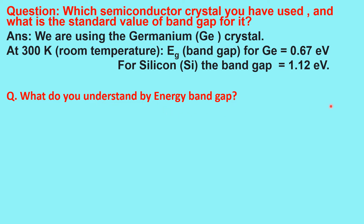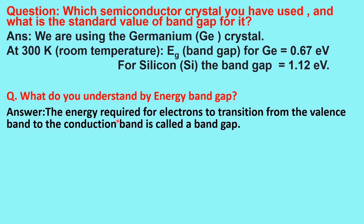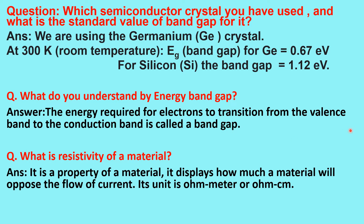What do you understand by energy band gap? The energy required for electrons to transition from the valence band to the conduction band is called the band gap. What is resistivity of a material? It is a property of a material that describes how much a material will oppose the flow of current, and its unit is ohm meter or ohm centimeter. Conductivity is the opposite of resistivity.